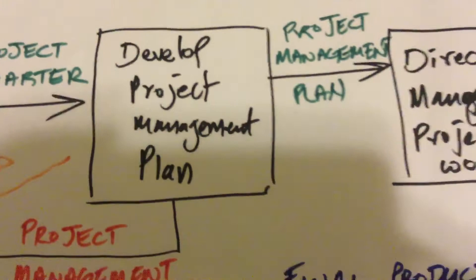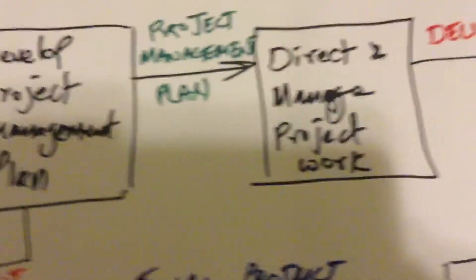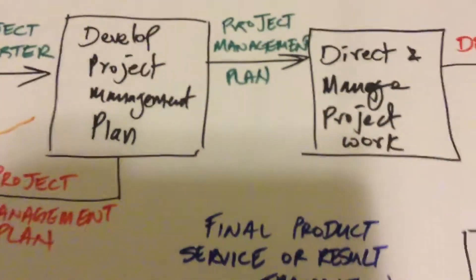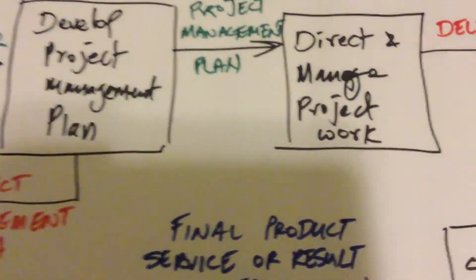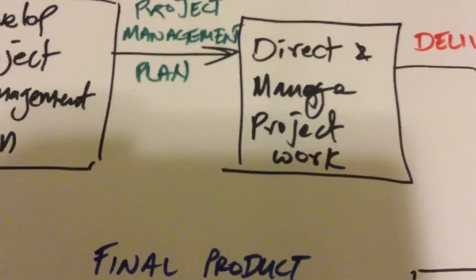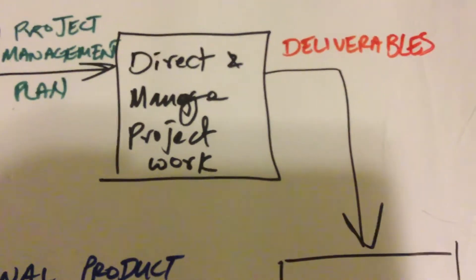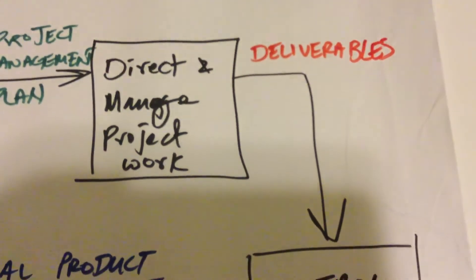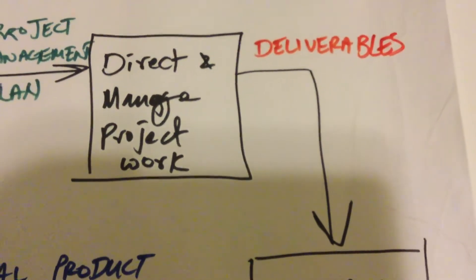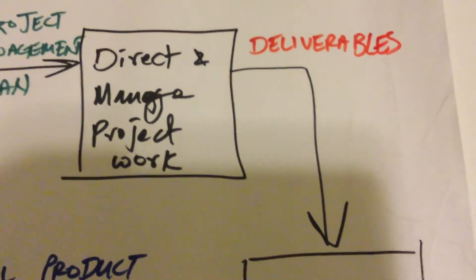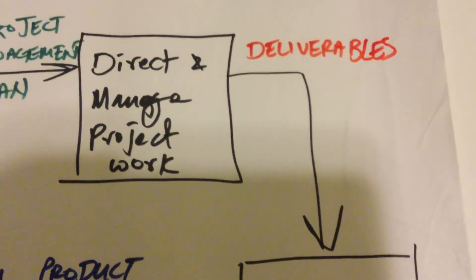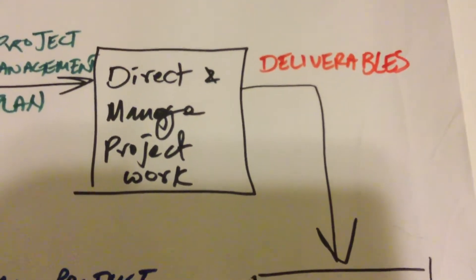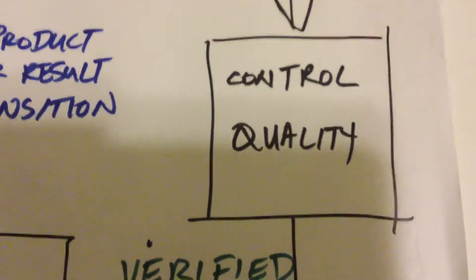I wanted to show you that the project management plan goes into the direct project and manage project work process. That's very important because from here we're going to end up getting deliverables. Deliverables refers to a product, service, or result. And without that deliverable, you cannot close your project unless you get it right. So these deliverables need to be checked to make sure we actually got it right.